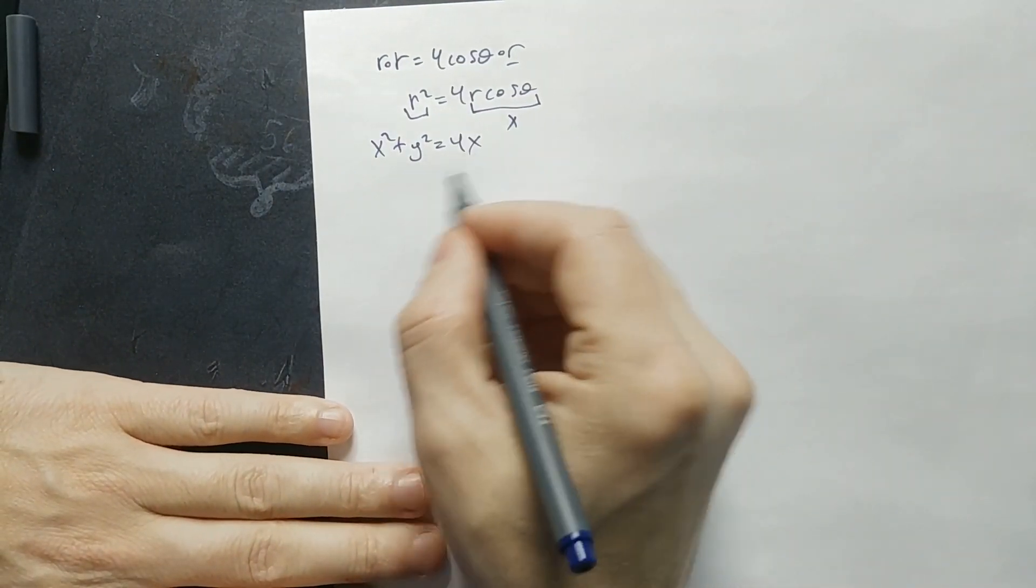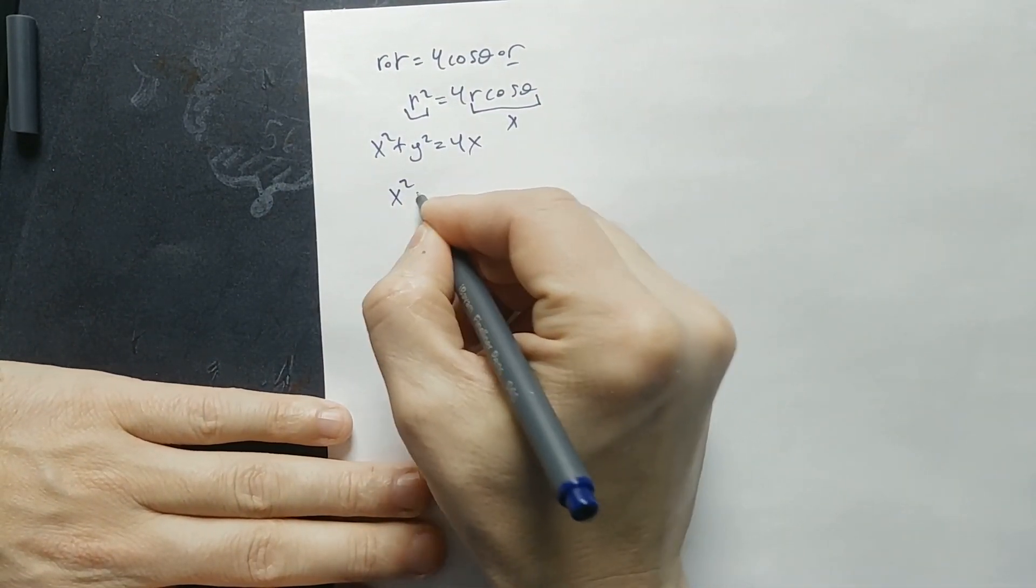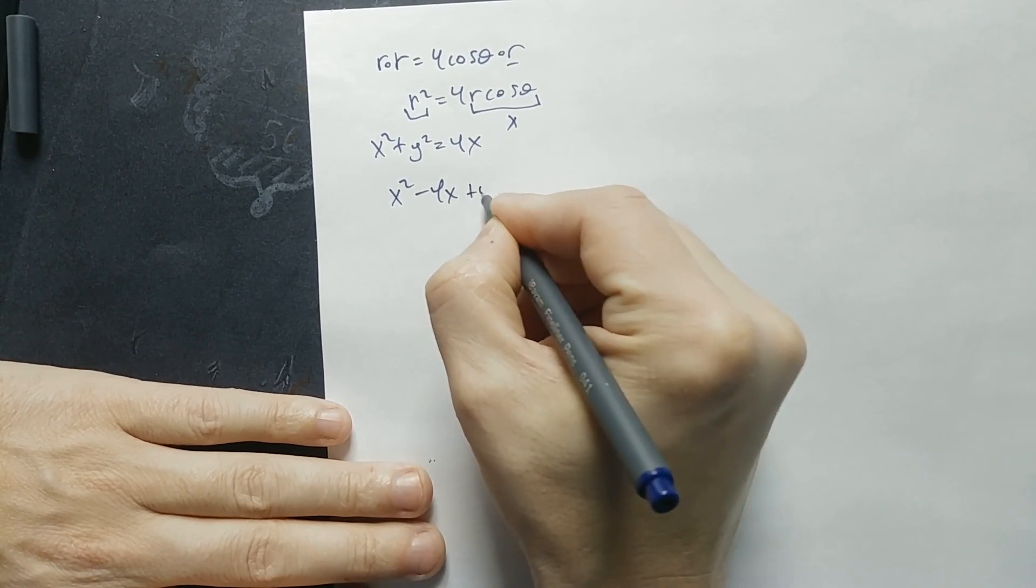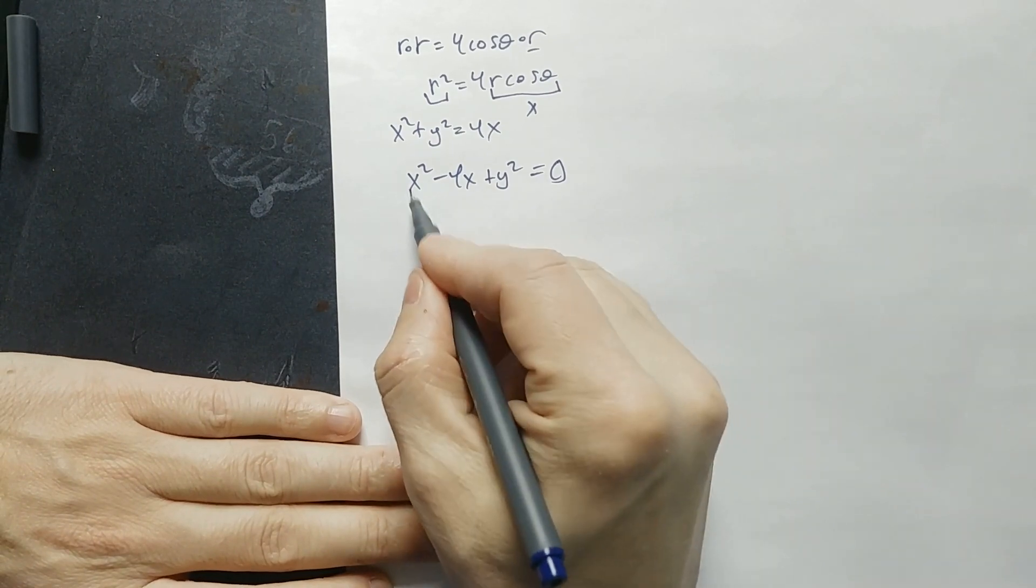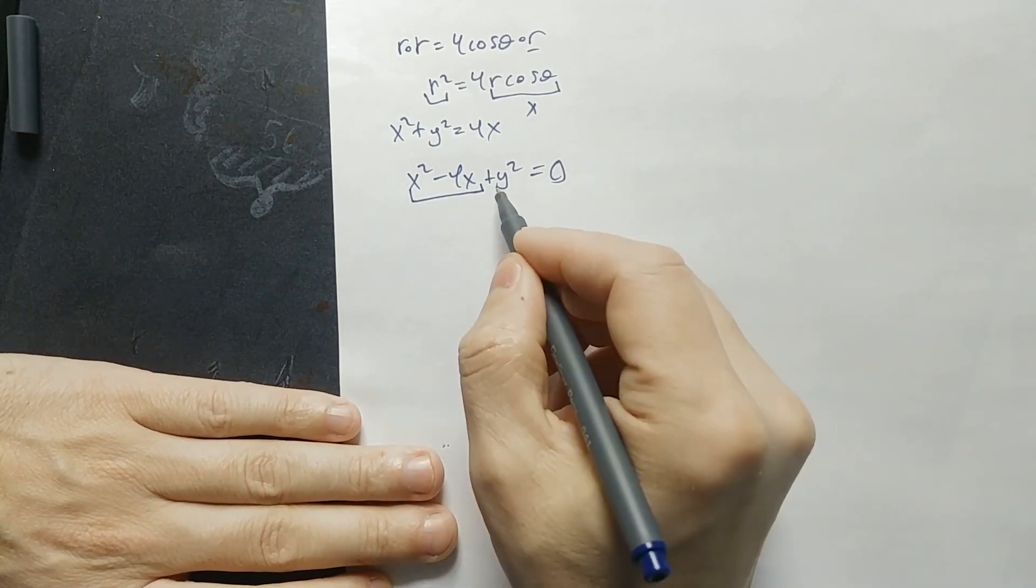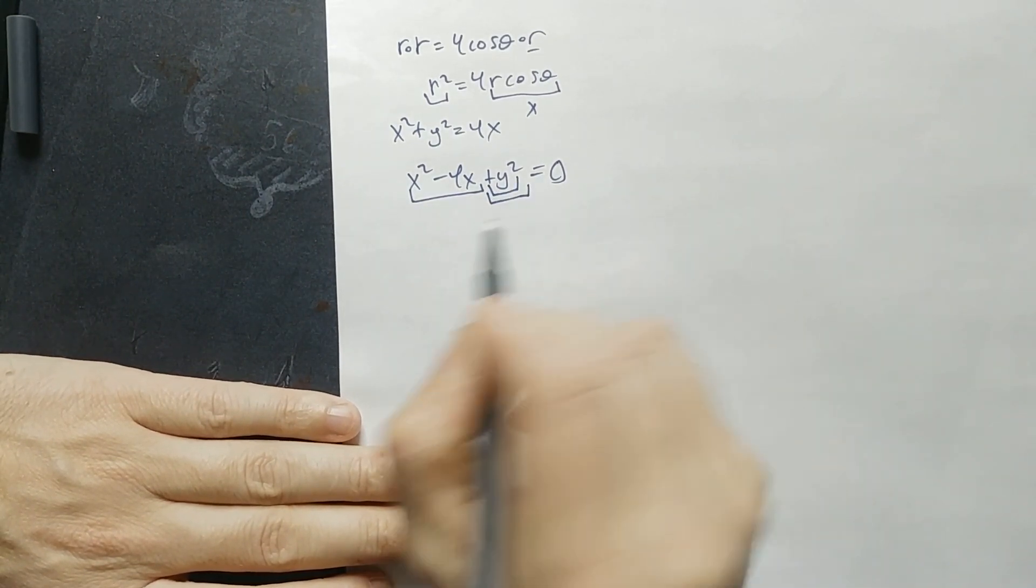Once this is in place, gather everything on one side. So it's x squared minus 4x plus y squared is equal to zero. And from there, complete the square on this part. Leave the y squared part as it is. Leave that unchanged.